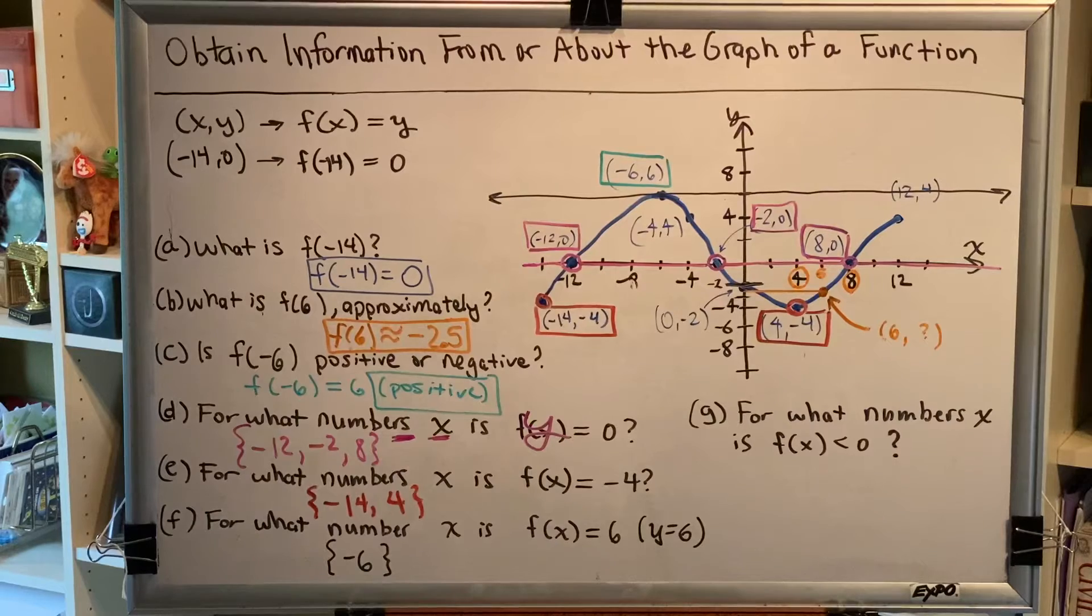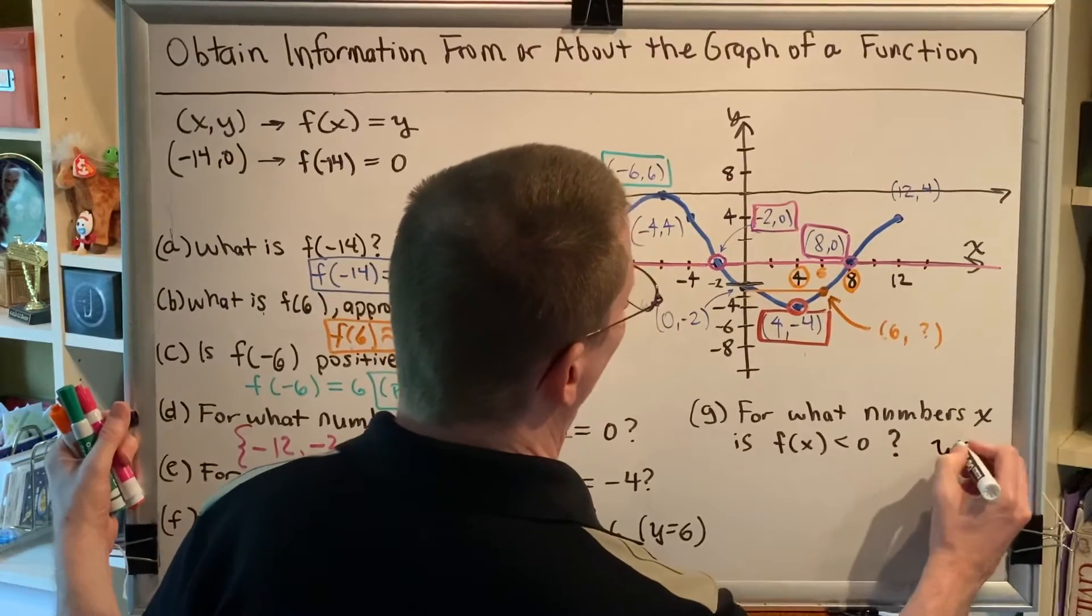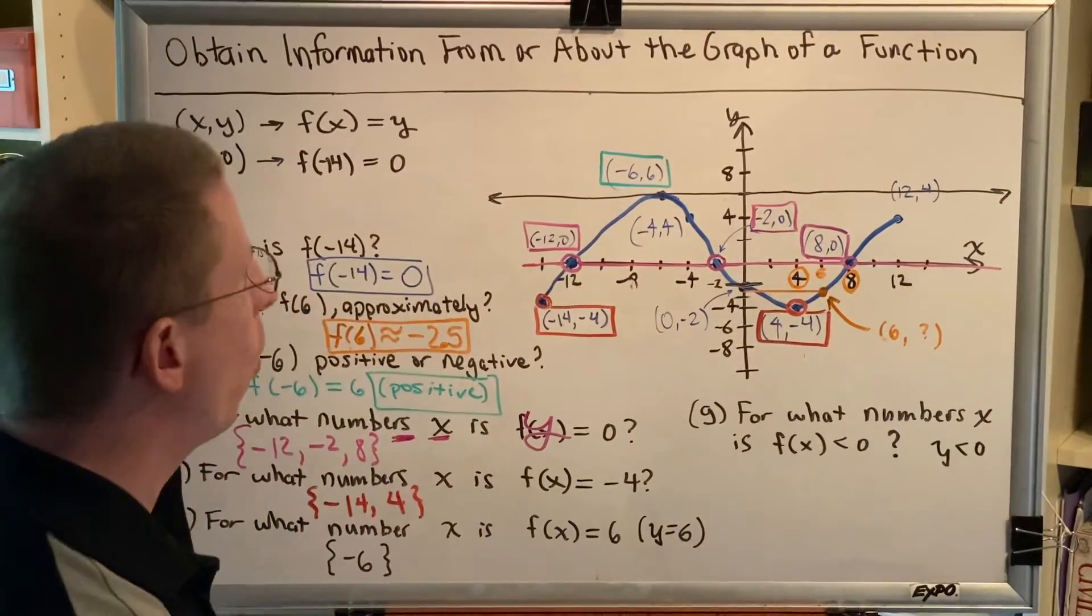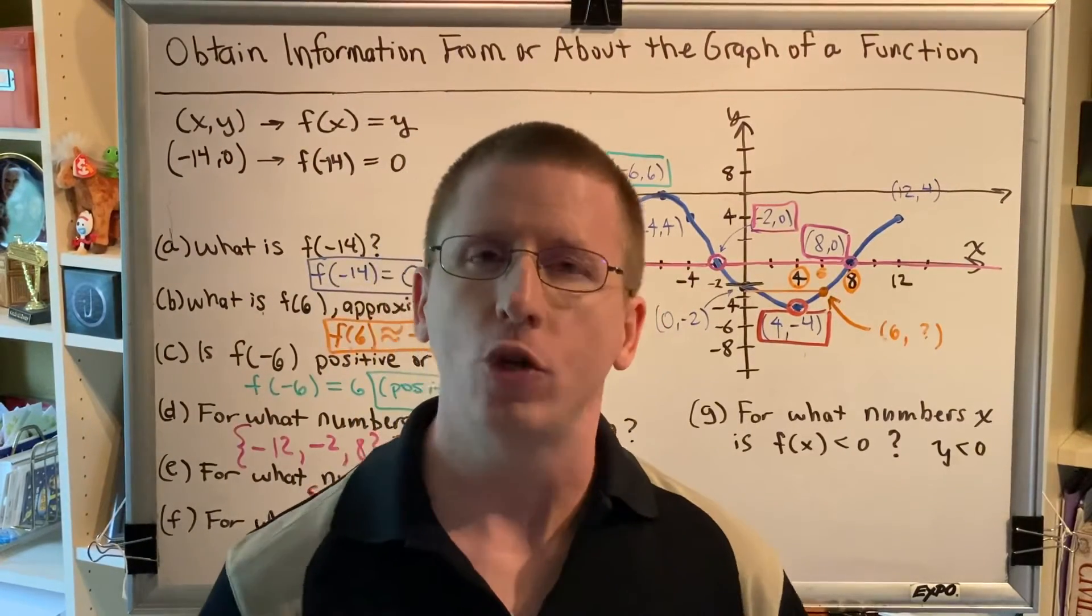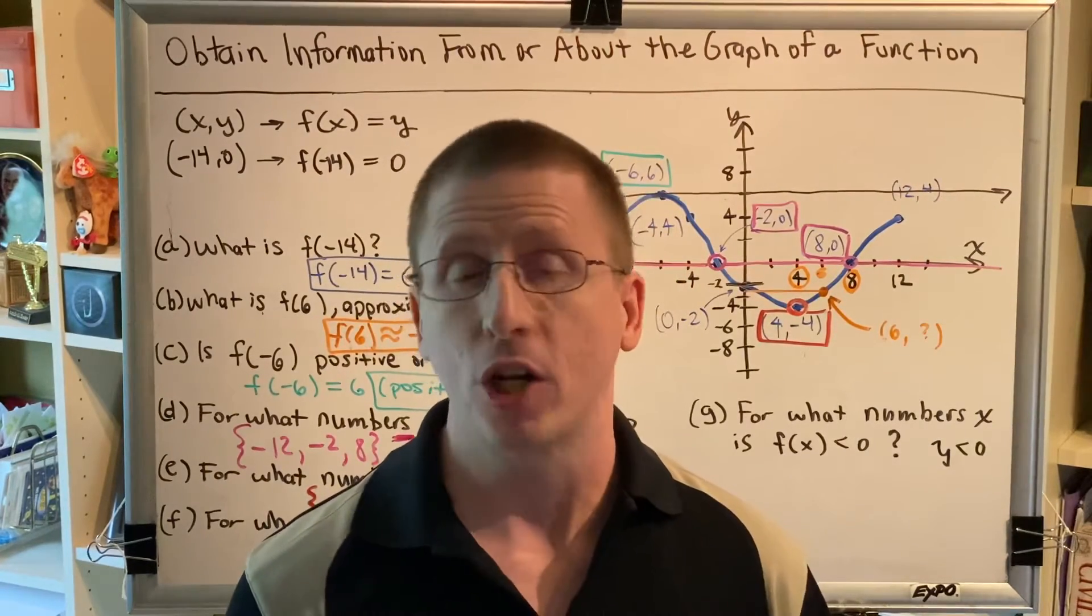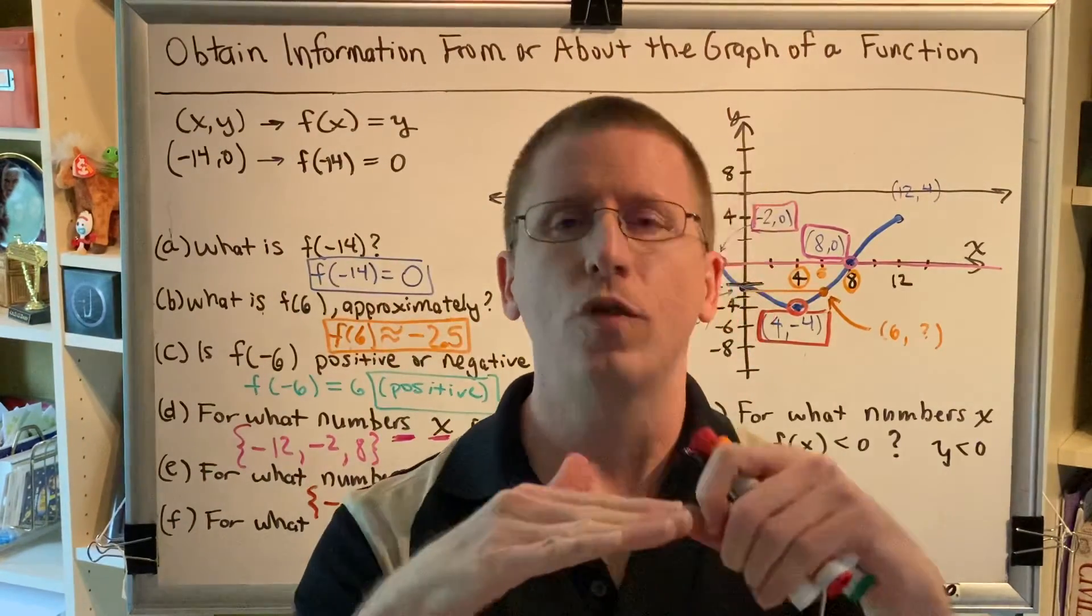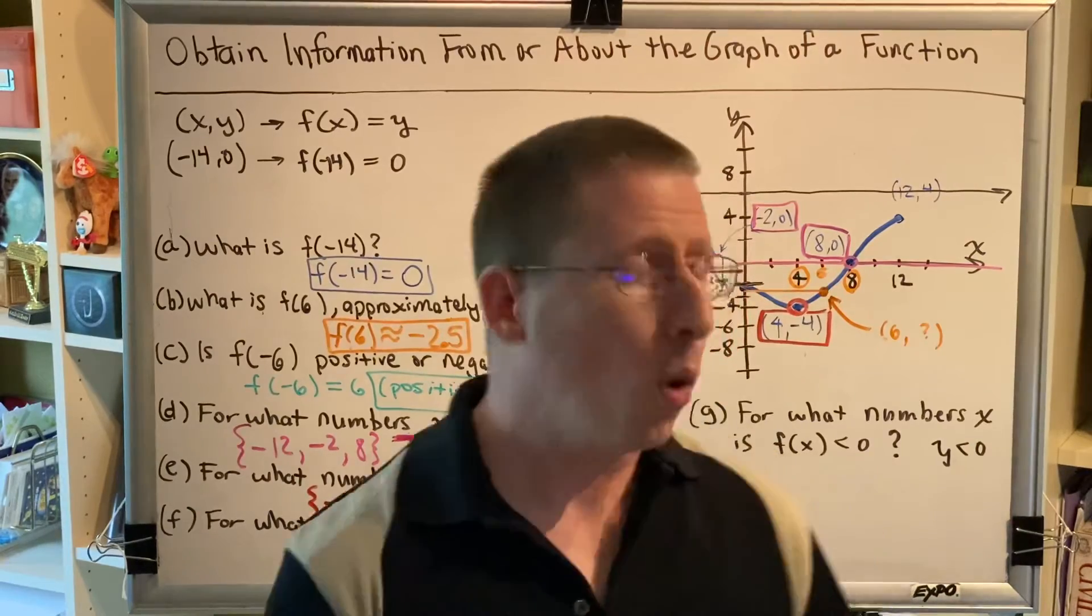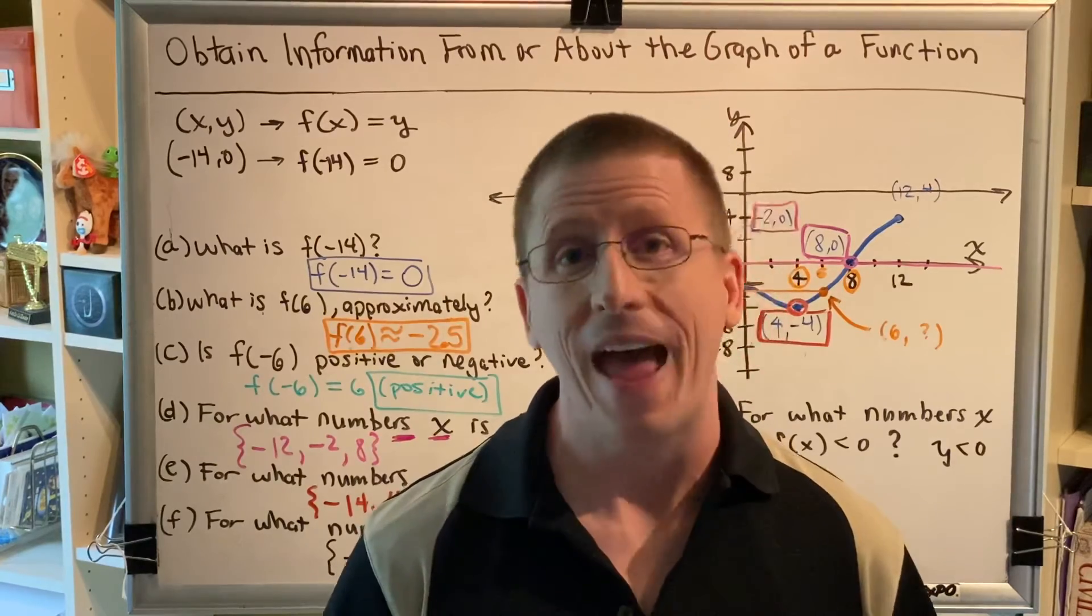That brings us to part G. For what numbers x is f(x) less than 0? So here's where we have to be very thoughtful. Once again, we're going to think of f(x) as y. So what they're saying is, what points on this graph have y coordinates that are less than 0? Well, think about what a y coordinate measures. If I asked you to plot a point and I told you its y coordinate, that tells you how far you have to go up or down to plot that point.